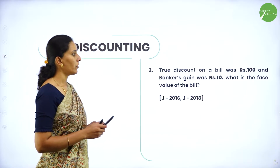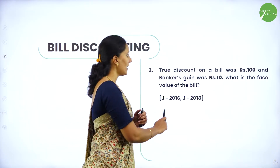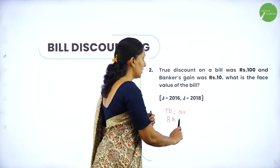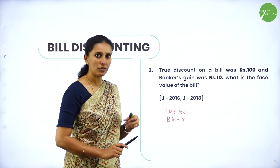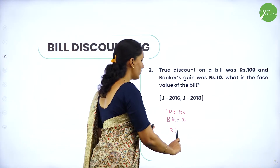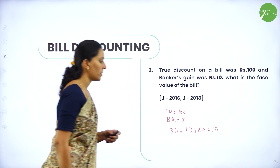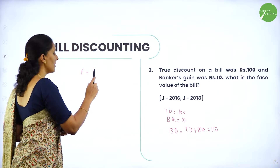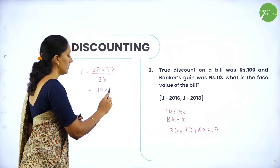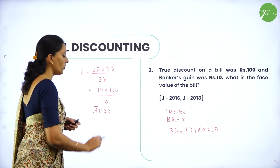Next question: True discount on a bill was rupees 100 and banker's gain was rupees 10. What is the face value of the bill? Here TD = 100 and BG = 10. To find face value using the formula, banker's discount is needed. BD = TD + BG = 100 + 10 = 110. Face value = (BD × TD) / BG = (110 × 100) / 10 = rupees 1100.